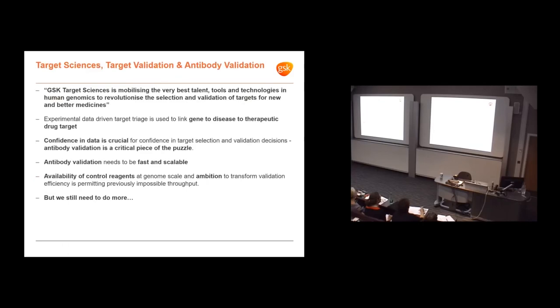I'm going to wrap up now. GSK Target Sciences is using the latest technologies and best talent to revolutionize the selection and validation of targets for new and better medicines. Using experimental data triage to link gene to disease and especially to a therapeutic drug target that's viable. We really need confidence in the data because these are huge investment decisions. A drug discovery campaign is a hundred million pound exercise. Antibody validation is a critical piece of the puzzle. Without valid antibodies, we're making the wrong decisions.